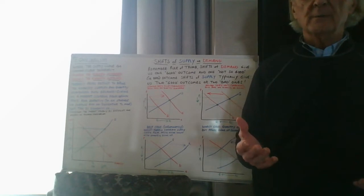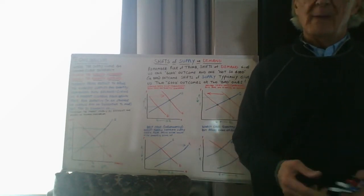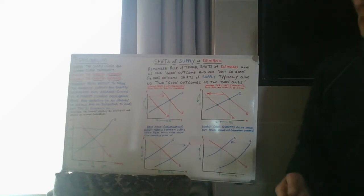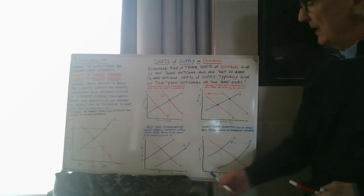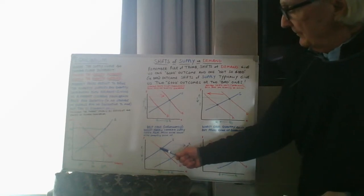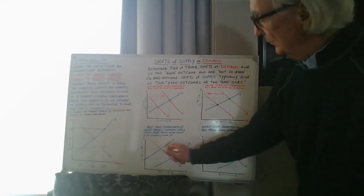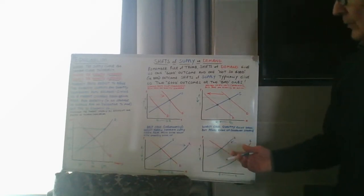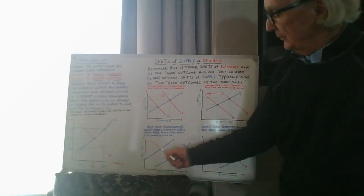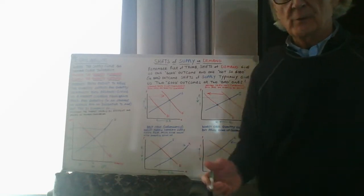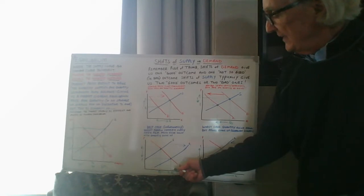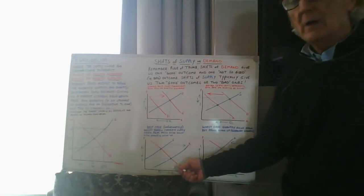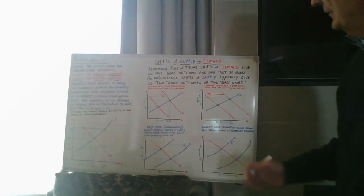Shifts of supply are a little different — you either get two good things or two bad things. The best case, which doesn't happen all that often, is when supply shifts dramatically to the right. We move from the old equilibrium to a new one that is out to the right and lower. The price has gone down and the quantity has increased — the best of both worlds: prices going down and increased quantities transacted.